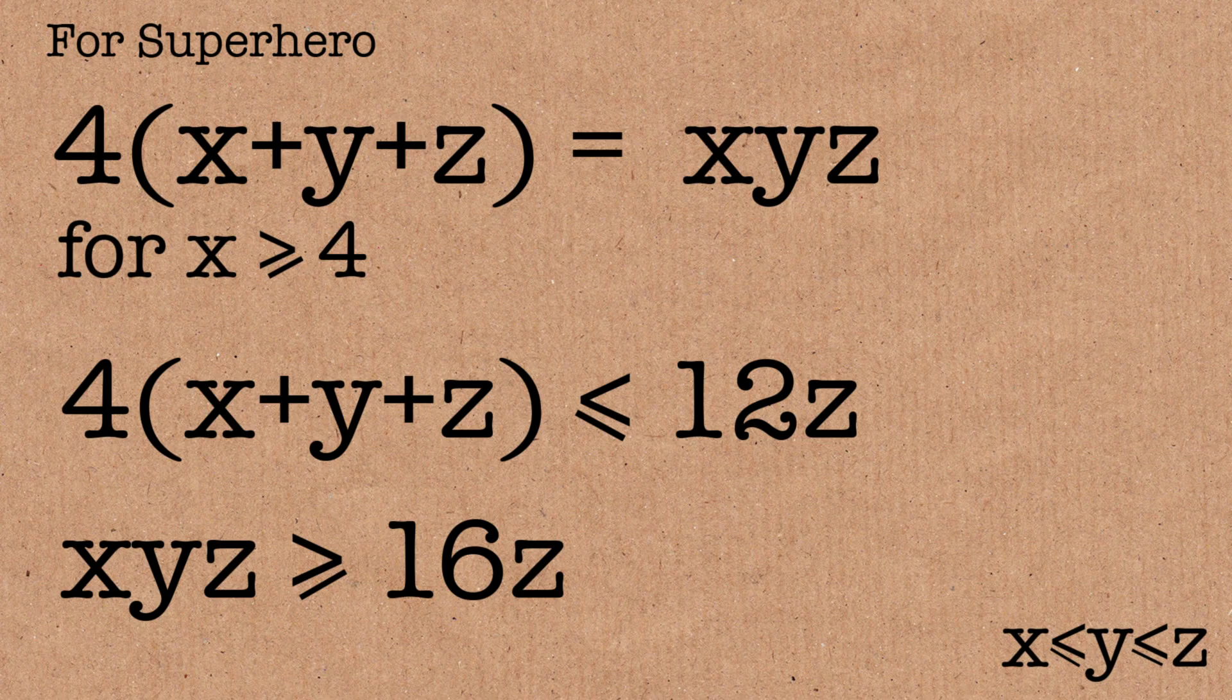And to solve it, we're looking for a number smaller than 12z, bigger than 16z at the same time, which is impossible, which means you can stop looking, end of proof.